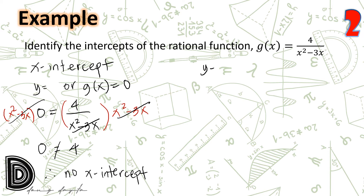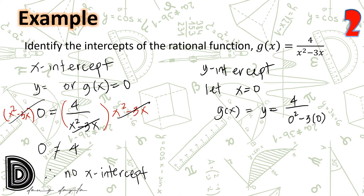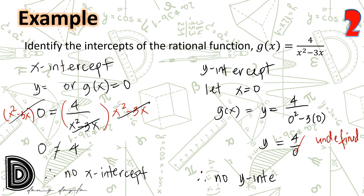Let us look for the y-intercept of this rational function. We let x equal zero. Substituting, we have g(x) = 4 / (0²−3×0) = 4/0, which is undefined. Therefore, this rational function has neither x-intercept nor y-intercept. In other words, the graph of g(x) = 4/(x²−3x) does not cross or have a point on the x-axis nor the y-axis.